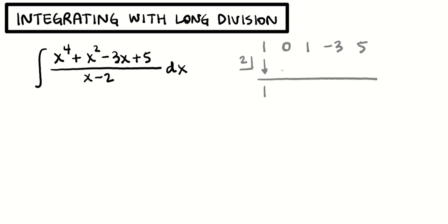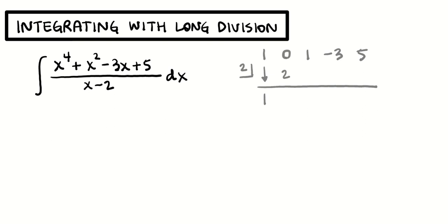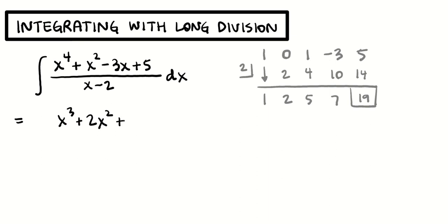I'm going to drop the first coefficient down, multiply by 2, then add down and multiply again — continuing: add, multiply, add, multiply, and add. What this means is that this quotient is equal to 1x cubed — because if I take x to the 4th and divide by x, I get something related to x cubed — plus 2x squared, plus 5x, plus 7. The remainder is 19, and remember the remainder goes over the divisor, which is x minus 2.